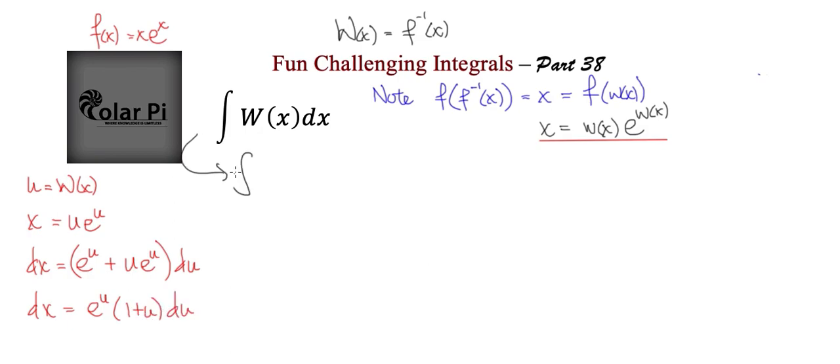So then we're ready to write our integral in terms of u. So our integral is going to be u, which is W of x, and then dx, which we have down there. And if we multiply u to what we have here as being dx, then what we're going to get is u squared plus u times e to the u times du.